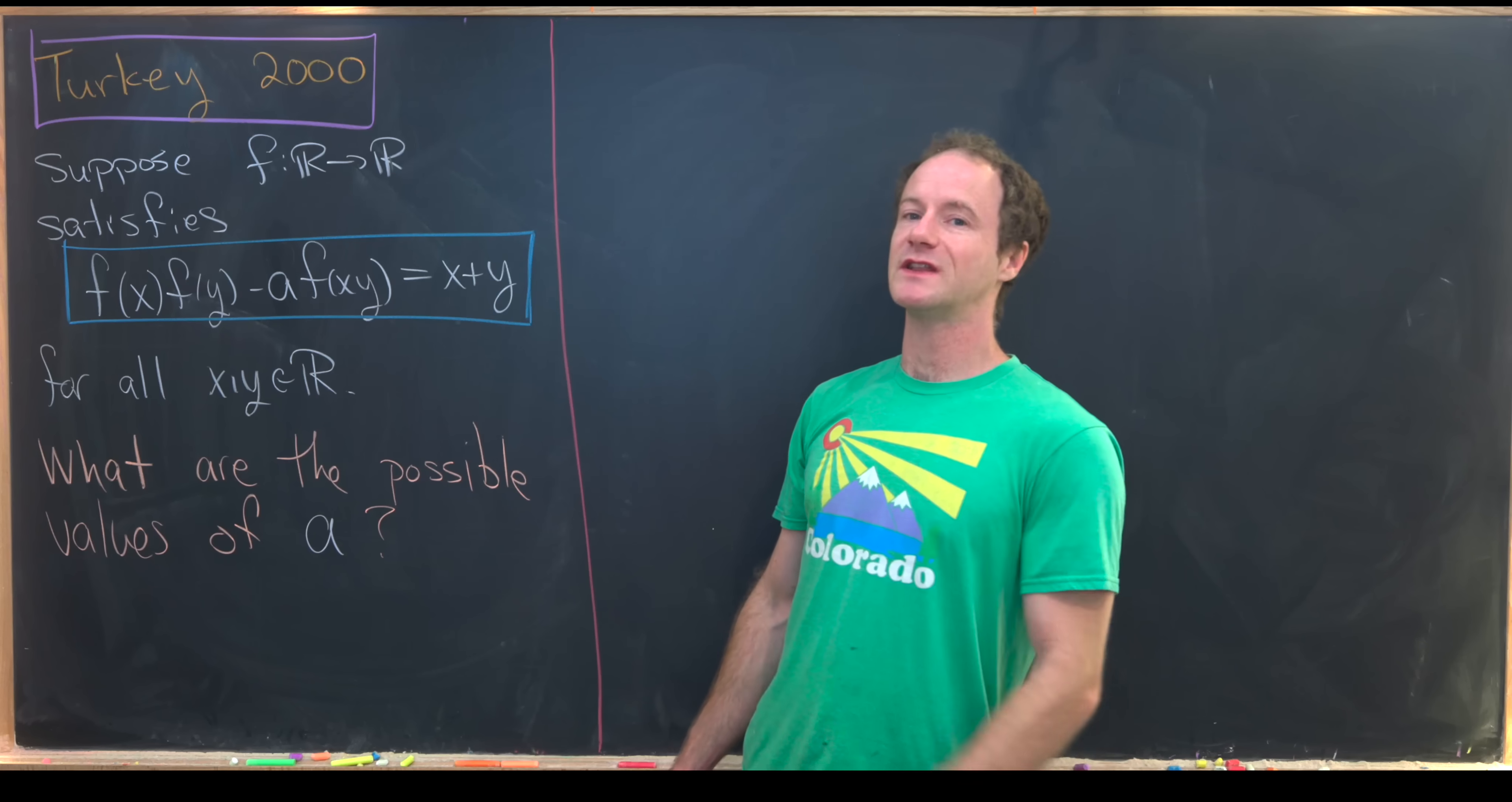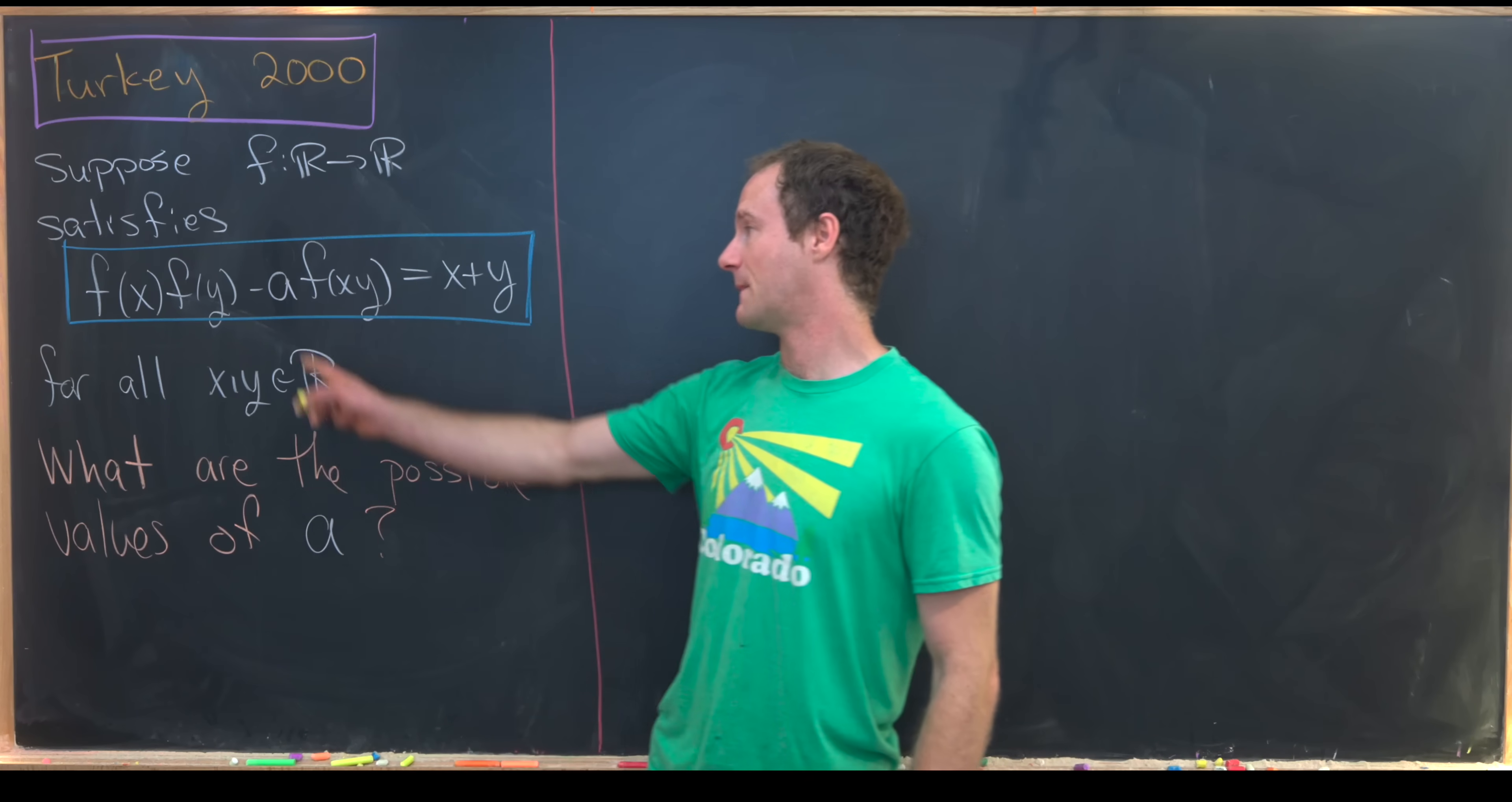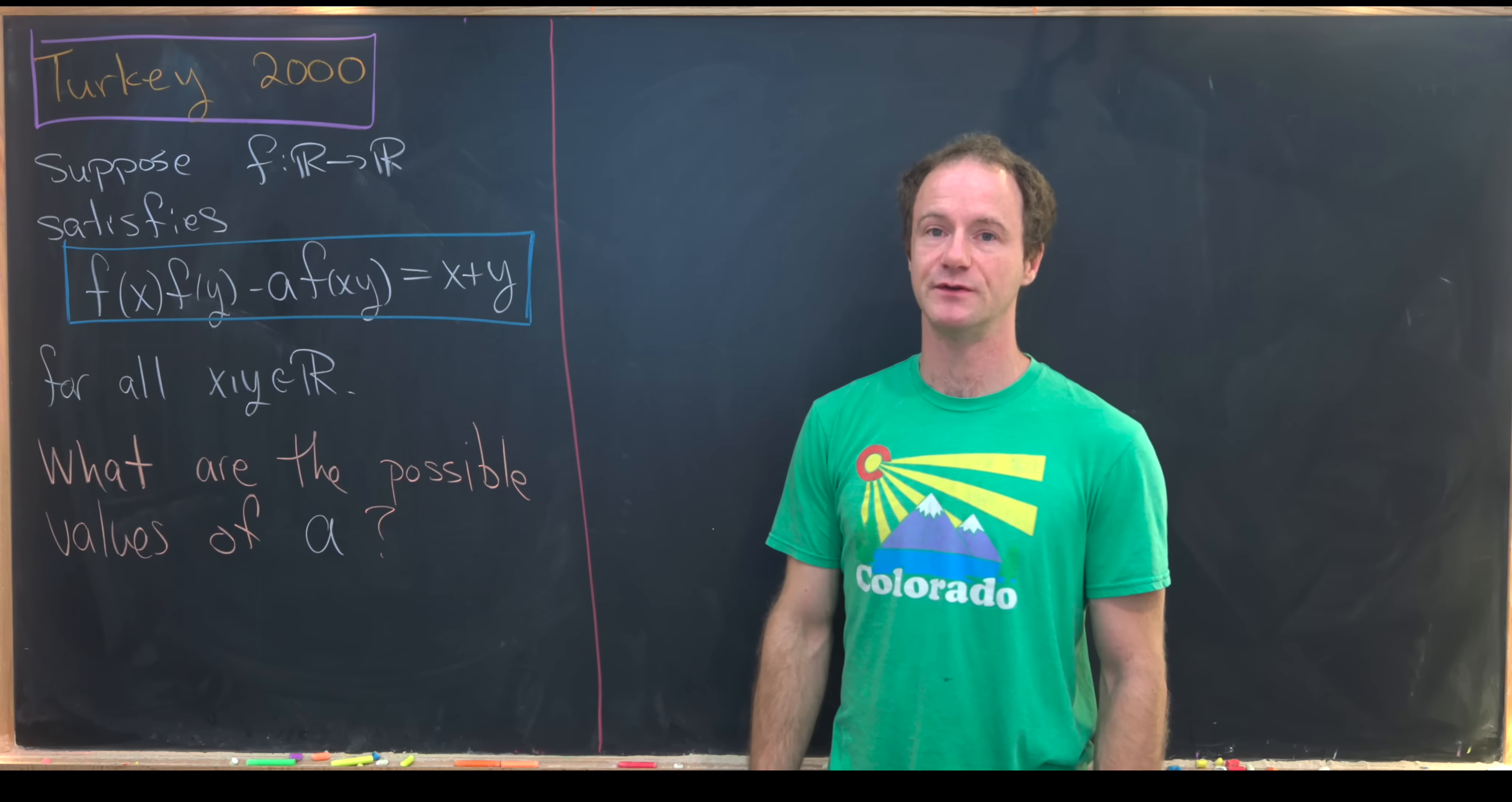Let's look at how this problem is stated. We want to suppose that a function from the real numbers to the real numbers satisfies the following equation. So we have f(x)f(y) - af(xy) = x+y, and that must be true for all xy which are real numbers. And our goal is to determine the possible values of a.